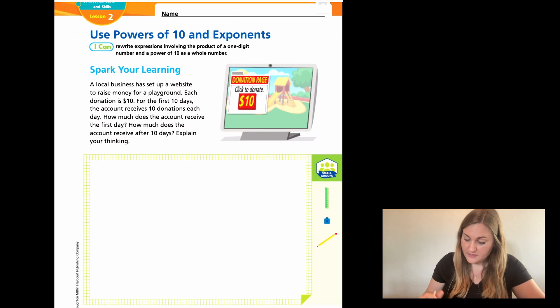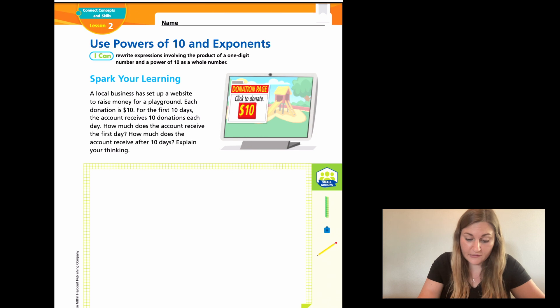If we jump to page 9, the Spark Your Learning. A local business has set up a website to raise money for a playground. Each donation is $10. For the first 10 days, the account receives 10 donations each day. How much does the account receive the first day? How much does the account receive after 10 days? Explain your thinking. I want you to try your best to work this out. Draw some models, draw some arrays. Go ahead and pause it and try that now.